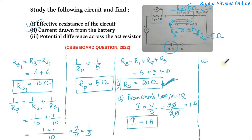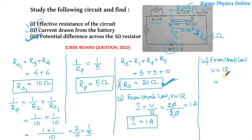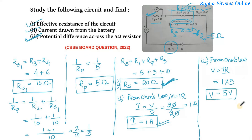Now for the third part — finding the potential difference across the 5 ohm resistor. Again we use Ohm's law: V equals IR. The current flowing in the entire circuit is 1 ampere, and the resistance across which the potential difference has to be measured is 5 ohm. So the potential difference across the 5 ohm resistor is 5 volt.